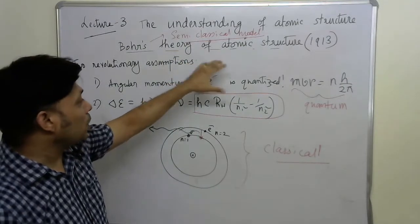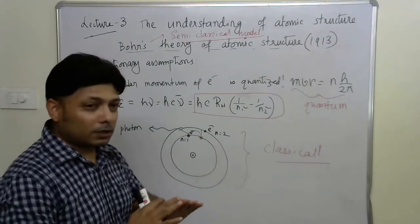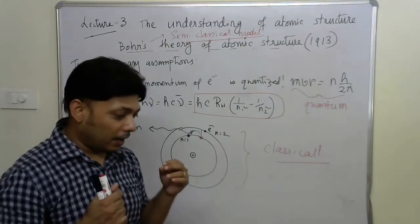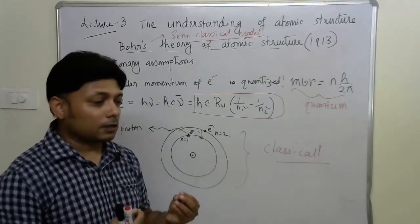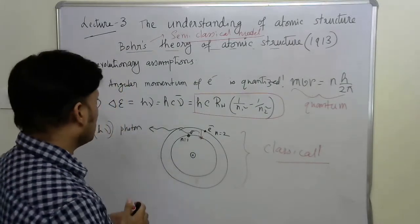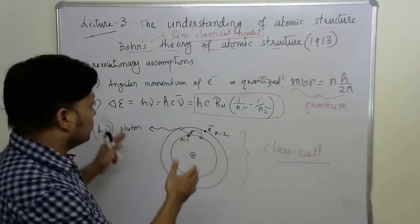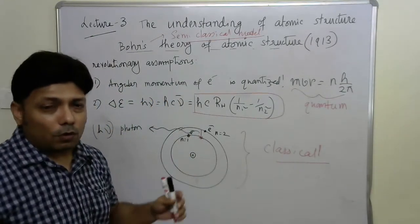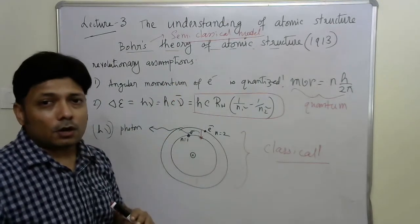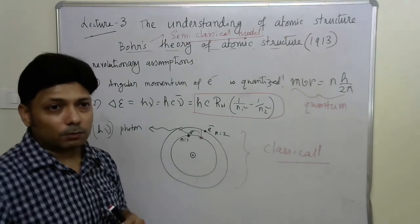Until and unless the theory is purely quantum, we cannot explain every experimental results about atomic structure. We can now give an overview of three major chronological discoveries at that time, including the atomic structure.